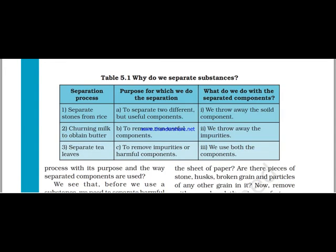Now let's do the second part: churning milk to obtain butter. As I have told you, butter is obtained when we churn milk at a very high speed. Why do we churn milk to obtain butter? Because we need to separate two different but useful components. Both butter and milk are useful components, so we will use both — we will use the milk and we will use the butter.